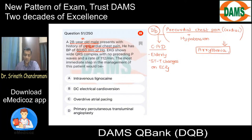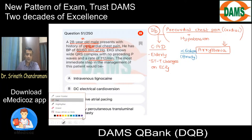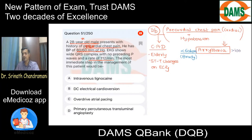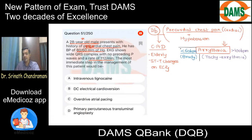In the arrhythmia, how do we classify? The ECG shows a wide QRS complex with no preceding P wave and a rate of 112 per minute. Arrhythmias are broadly classified into two: when the heart rate is less than 60 beats per minute, we classify them as bradyarrhythmia; when the heart rate is more than 100 beats per minute, we classify them as tachyarrhythmia. This patient is suffering from a tachyarrhythmia. Let us see how to classify it further.